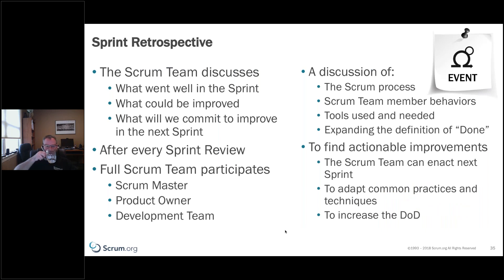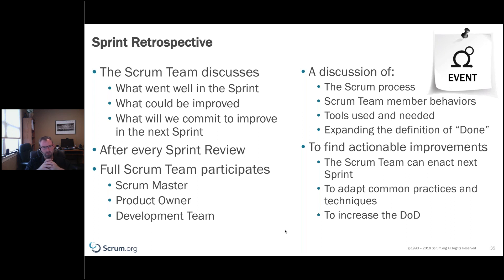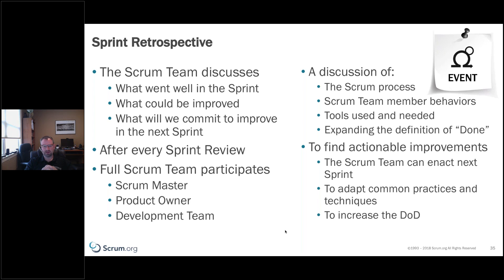The sprint retrospective is just the scrum team members — no outside participants — because we need to feel protected and safe to talk about what worked, what didn't, what we need to improve, and what got in the way of working together as a team. This is one of the most valuable events because it's about inspecting how we work and adapting as we move forward. The scrum values are critical here — we need respect, openness, and the ability to have those hard, crucial conversations as a team.